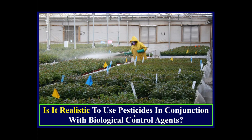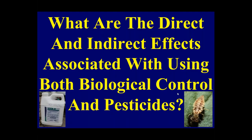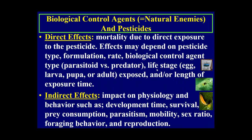Is it realistic to use pesticides in conjunction with biological control agents, or does it just make the job of growing plants much more difficult? That's a question the audience has to answer. Now let's get into the direct and indirect effects associated with using both biological control and pesticides.